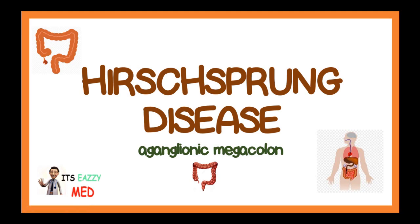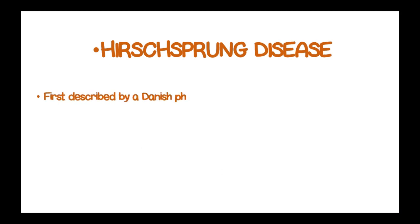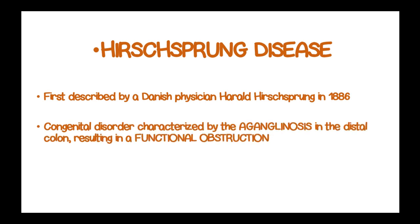Hirschsprung's disease, also known as aganglionic megacolon, was named after Danish physician Harald Hirschsprung in 1886. It refers to a congenital disorder characterized by aganglionosis in the distal colon that results in functional obstruction.